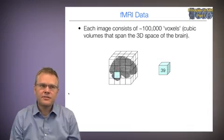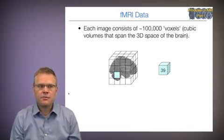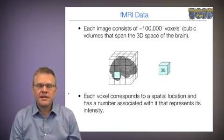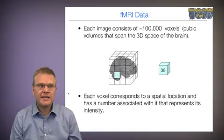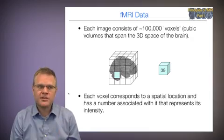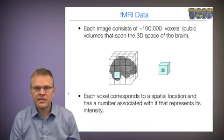Each voxel has a number associated with it, but also a spatial location. So basically, in this little cartoon, we take a voxel from a certain area of the brain, and we look at its value. In this cartoon, it's 39. So again, each voxel corresponds to a spatial location, and has a number associated with it that represents its intensity.